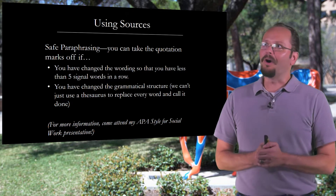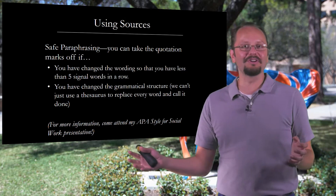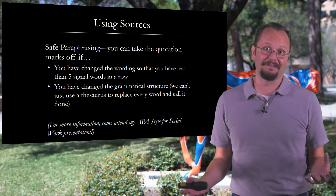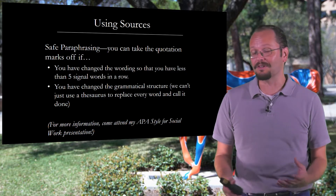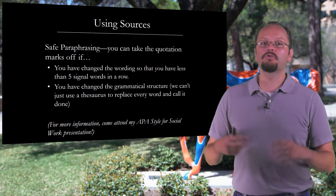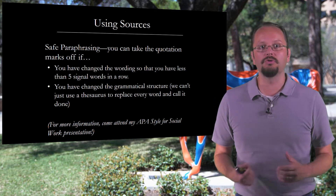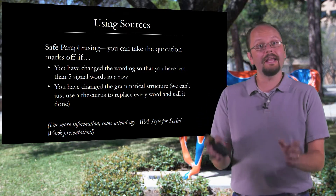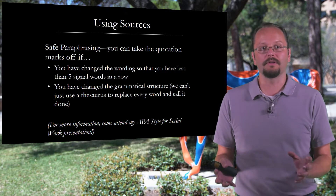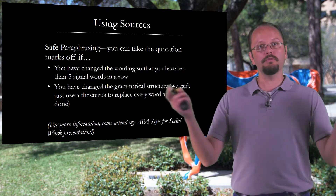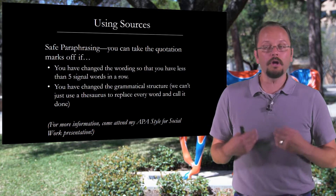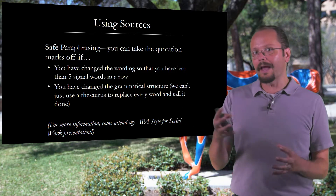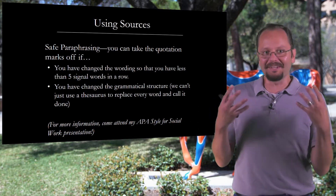You might think you could use a thesaurus to change every single word in the sentence to get around the five-word rule. But first, you'll get an awkward sentence because synonyms don't always mean exactly the same thing. Second, the grammatical structure of the sentence has to change as well. You can only take the quotation marks off if you have fewer than five signal words in a row AND you've changed the structure of the sentence. When I remove quotation marks, I take credit not just for word choice but also for the order of the words in the sentence. If I haven't changed that order, I'm still in ambiguous territory between paraphrasing and plagiarizing.